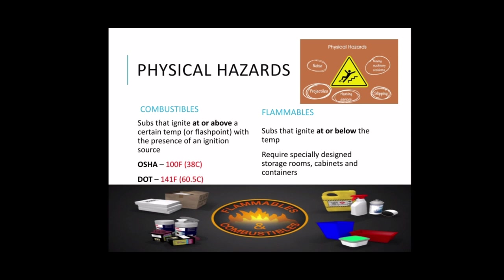Flammables, on the other hand, have flashpoints below the temperatures specified above, and require specially designed storage rooms, cabinets, and containers to prevent vapors from building up around electrical devices that spark. Flammables ignite below 100°F (38°C), or for DOT, below 141°F (60.5°C). When you say combustibles, that's above flammables. A helpful reminder: C comes before F — so combustibles are above, flammables are below.